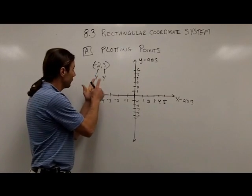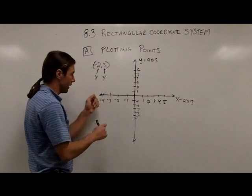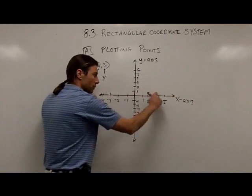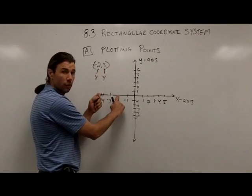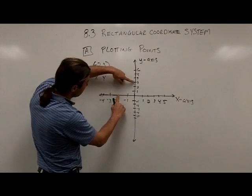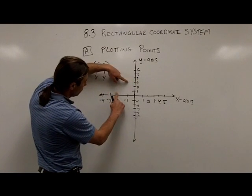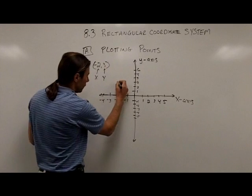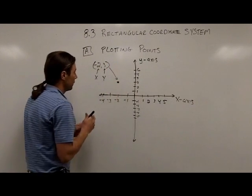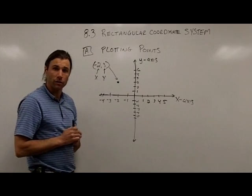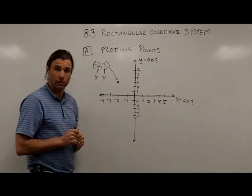So to graph this point negative 2, 3, I'm going to start in the x direction, which means moving along this number line. So I'm going to go negative 2 in the x direction, and then a positive 3 in the y direction. So here's positive 3 in the y direction. And where these two meet is where I'll graph that point, negative 2, 3. And that's how you graph points on the rectangular coordinate system.